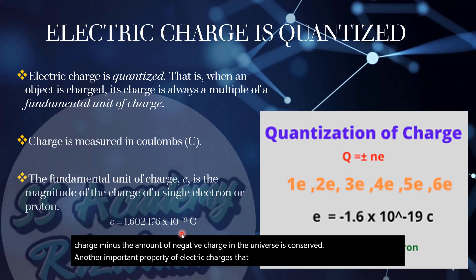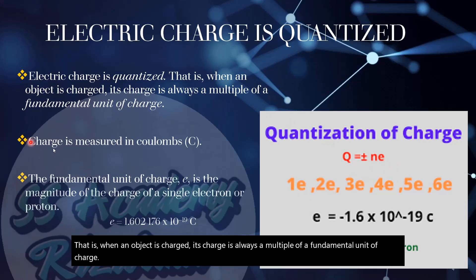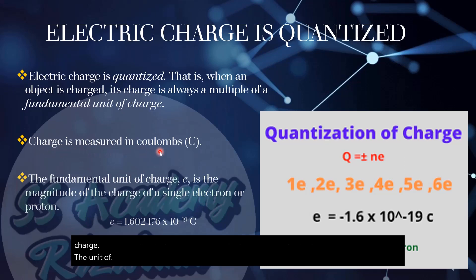Another important property of electric charge is that electric charge is quantized. That is, when an object is charged, its charge is always a multiple of a fundamental unit of charge. The unit of charge is the coulomb, and charge is measured in coulombs.